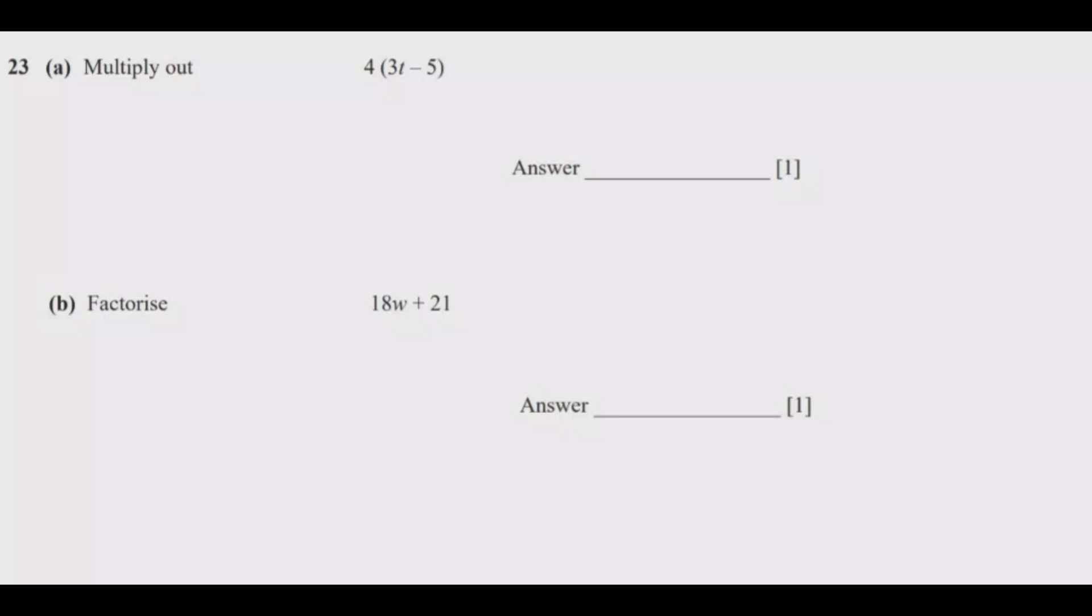Question 23a is as follows: multiply out 4, open bracket, 3t minus 5, close bracket.